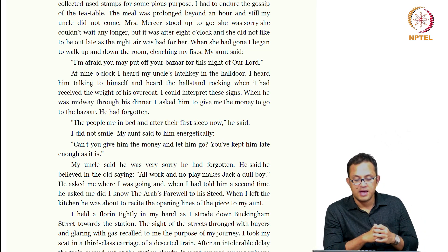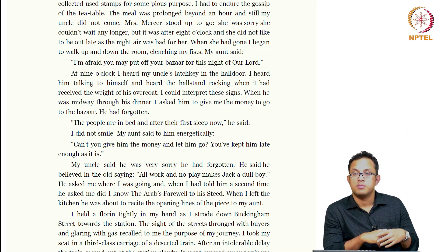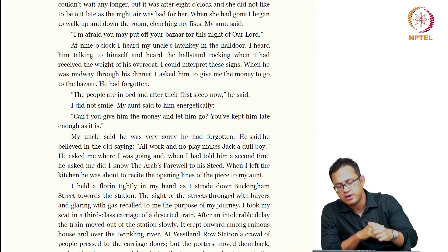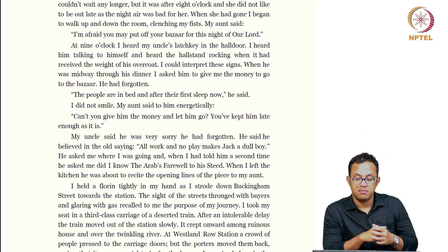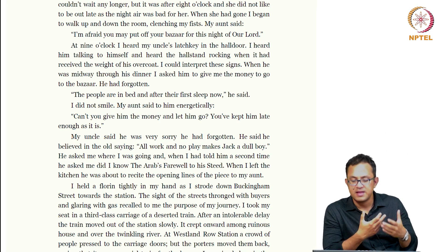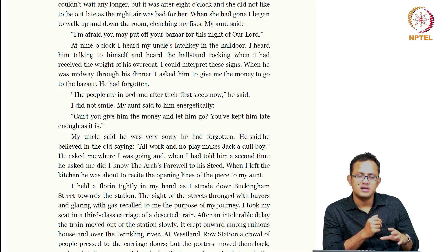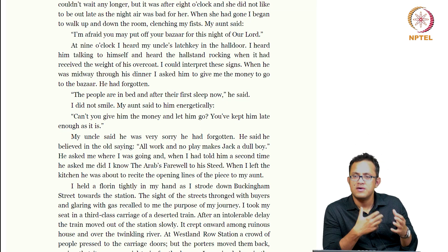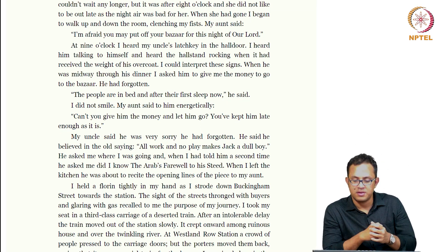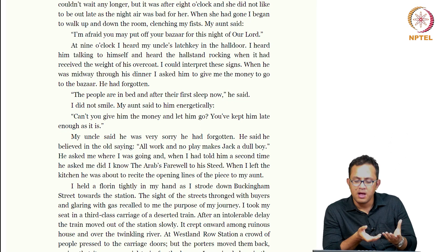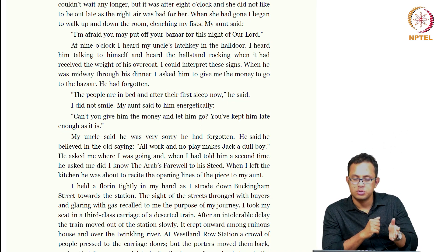When I left the kitchen, the uncle was about to recite the opening lines of the piece to my aunt. It is suggested very subtly that the uncle may be inebriated — he does not seem to have control over what he is saying and has no memory of what he had promised earlier. This complete detachment of the adult world from the childlike world is part of the lovelessness the boy experiences. He does not have parents — just an uncle and aunt — and there is no love in the home. The lovelessness is underlined over and over again through oblivion, detachment, and indifference.